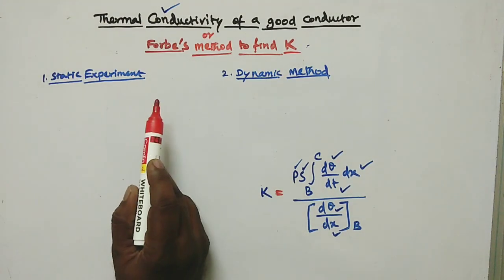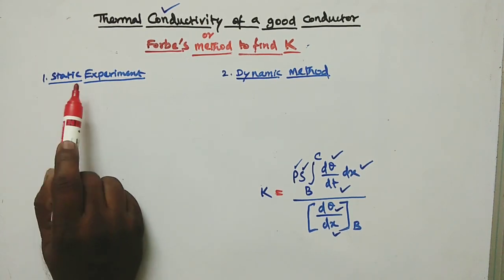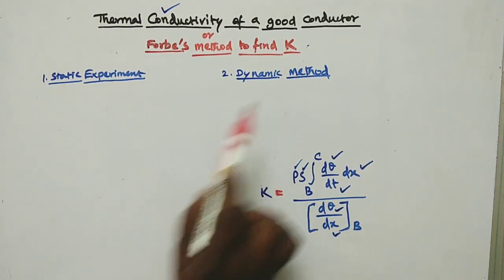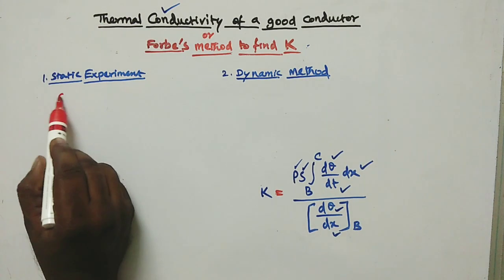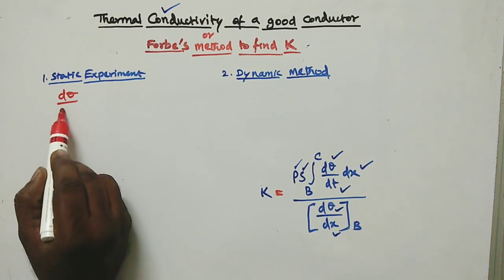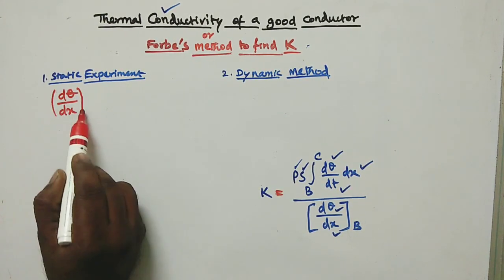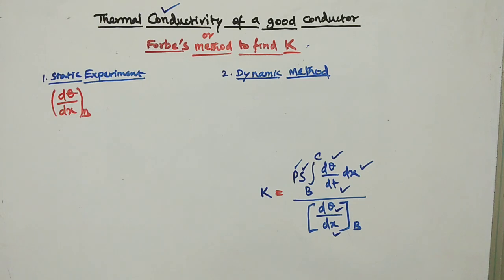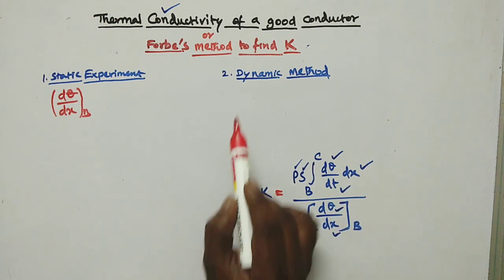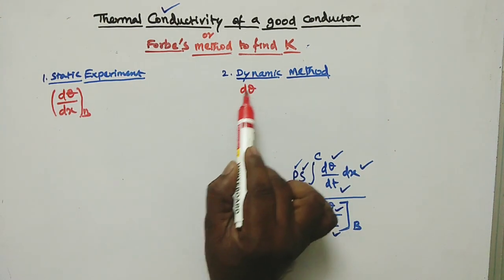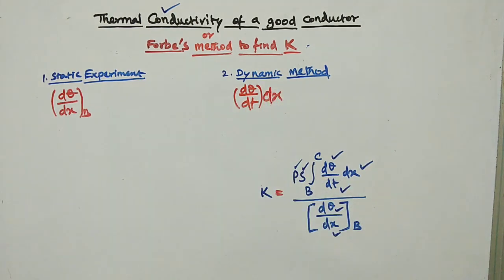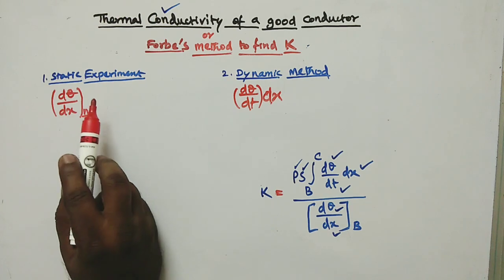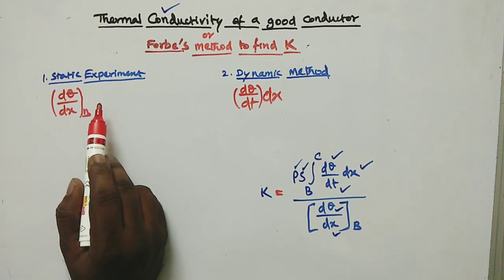This experimental method is divided into two steps. The first one is the static experiment, and the second one is the dynamic method. The static experiment is used to find dθ/dx at point B. The dynamic method is used to find dθ/dt integrated over dx from B to C.